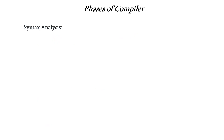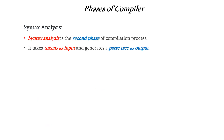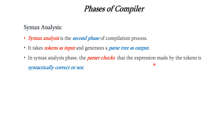The next phase is syntax analysis. It is the second phase. It takes the tokens as input and generates the parse tree as output. In this phase the parser checks that the expression made by the tokens is syntactically correct or not. If any syntax errors are there, it is not passed to the next phase.